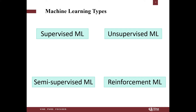In reinforcement learning, the machine continuously trains itself on a continual basis. This is one of the powerful algorithms behind some of the self-driving cars we see today. You could also combine reinforcement learning with deep learning — called deep reinforcement learning. I think over the next few years we're going to hear more from reinforcement learning.